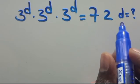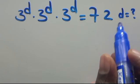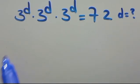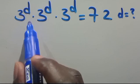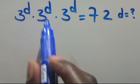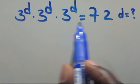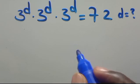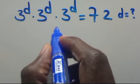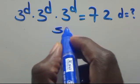What is the value of D given that t to the power of D times t to the power of D times t to the power of D equals 72?